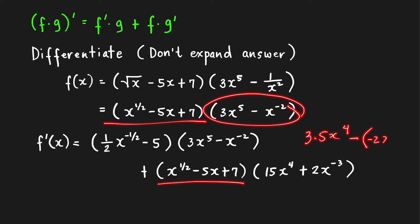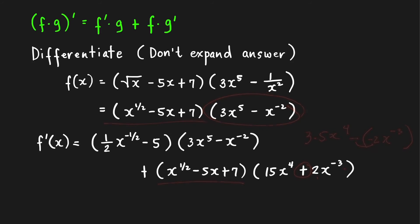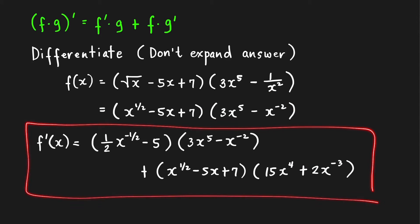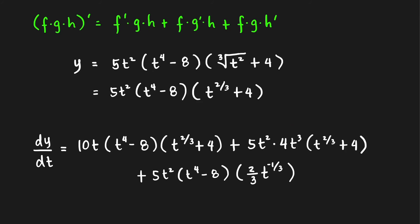Minus minus becomes plus 2x^(−3). Therefore, this is the derivative of our function f.